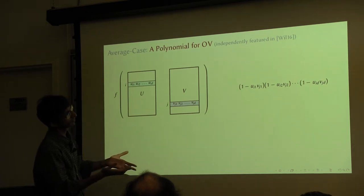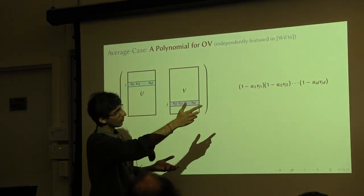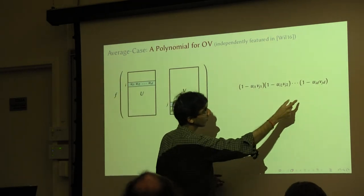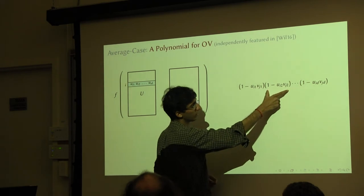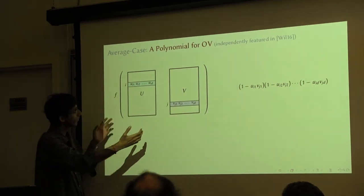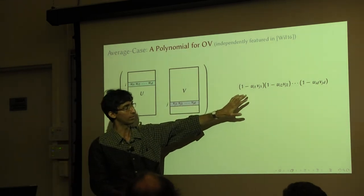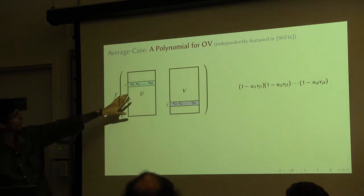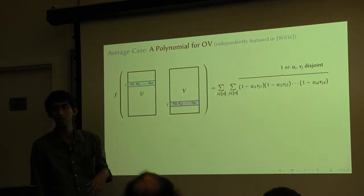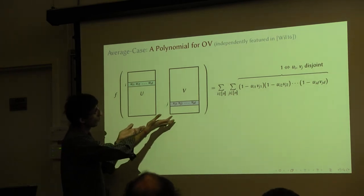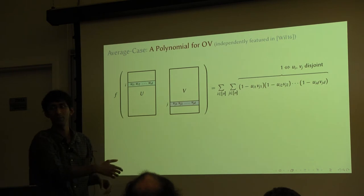We start by considering the following expression over any row from the first set and any row from the second set. The property this expression has is that if these two rows happen to be disjoint, then this expression equals 1 — because disjointness means all the small products are 0, which means all these factors are 1, so the whole thing is 1. Whereas if they are not disjoint, there is one coordinate where both are 1, so one of these factors becomes 0 and the whole expression becomes 0. So evaluating this expression on a 0-1 input tells me exactly whether the pair is disjoint or not.